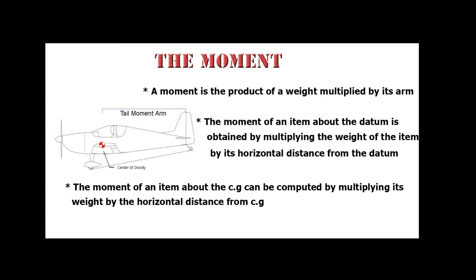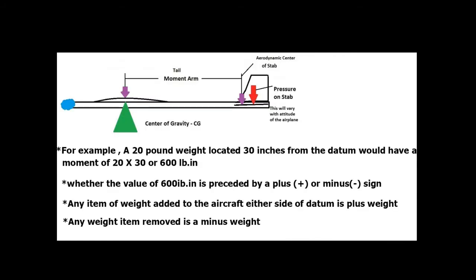A moment is the product of a weight multiplied by its arm. The moment of an item about the datum is obtained by multiplying the weight of the item by its horizontal distance from the datum. The moment of an item about CG can be computed by multiplying its weight by the horizontal distance from CG. For example, a 20-pound weight located 30 inches from the datum would have a moment of 20 × 30, or 600 lb·in.